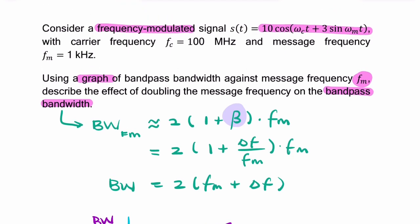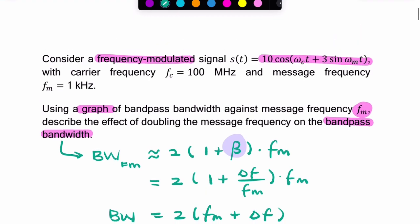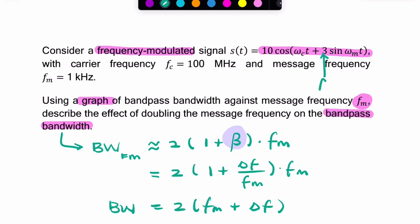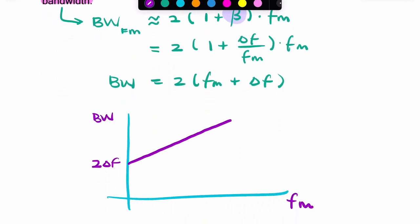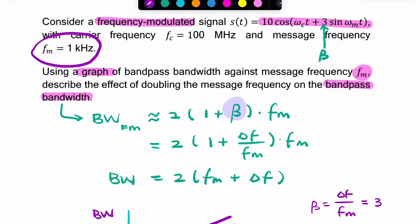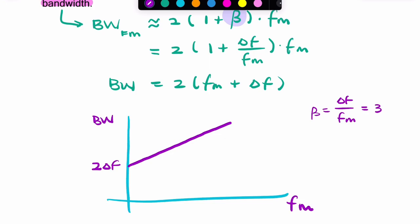...we can tell by looking at this, if you differentiate that, you can tell that the modulation index is 3. So let's agree that this is beta. If beta, which is delta F divided by fm, is 3, and if we know that fm is 1 kilohertz, then delta F is 3 times 1, which is 3 kilohertz.